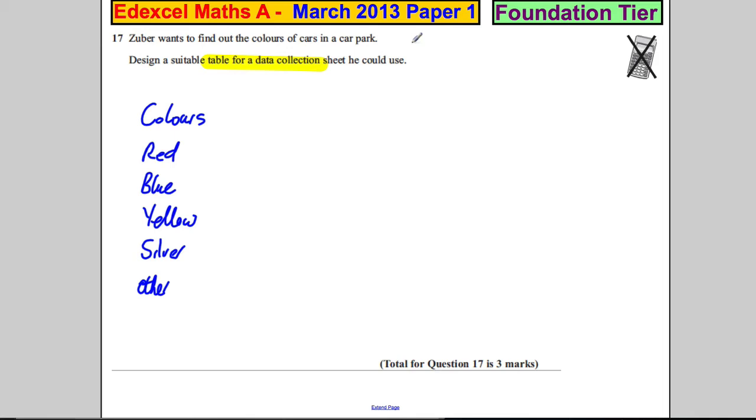Then you have to be able on a data collection sheet to tally them off. So you need a tally column. That's when you go one, two, three, four, five, that type of thing.